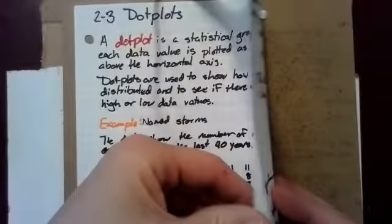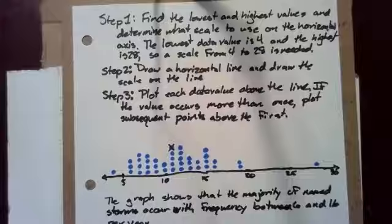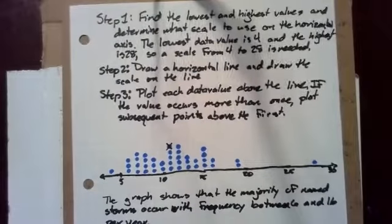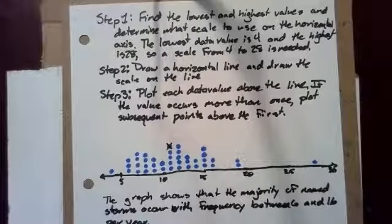And as it happens, the first thing we need to do is to find the lowest and highest values and determine what scale to use on the horizontal axis. The lowest data value is 4 and the highest is 28. So a scale from 4 to 28 is needed, and what I wound up doing is using a scale from 4 to 30.